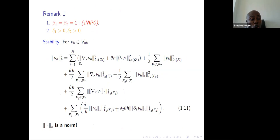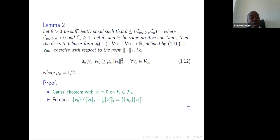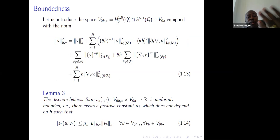We need a norm, and we construct one for this setting. Once we have a norm, we prove two main ingredients: ellipticity and boundedness. The ellipticity proof follows Gauss's theorem using the magic formula. For boundedness, we introduce a new space equipped with an additional norm, and in this norm we prove the boundedness of our bilinear form.